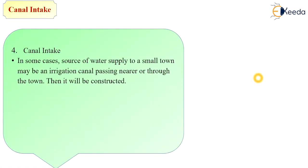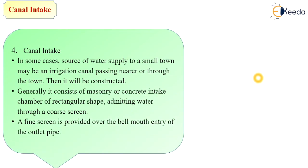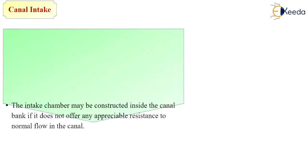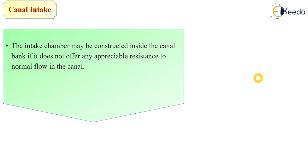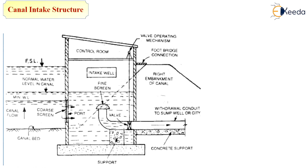Next is canal intake. In some cases, the source of water supply available to a small town may be an irrigation canal passing near or through the town. It generally consists of a masonry or concrete intake chamber of rectangular shape admitting water through a coarse screen. A fine screen is provided over the bell mouth entry of the outlet pipe to avoid silt content or floating material. The intake chamber may be constructed inside the canal bank if it does not offer appreciable resistance to normal flow. It is preferred to provide lining to the canal near the intake chamber to avoid leakage.